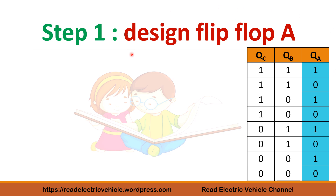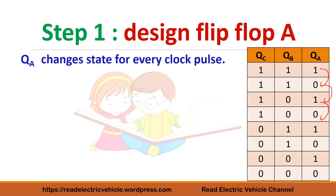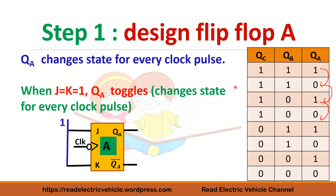The first step is designing flip-flop A. You see QA is 1, 0, 1, 0, 1, 0, 1, 0 — it alternates, meaning flip-flop A changes its state every clock pulse. So we tie J and K together to 1 so the output toggles every clock cycle. The output will be 1, then 0, then 1, 0 alternating.